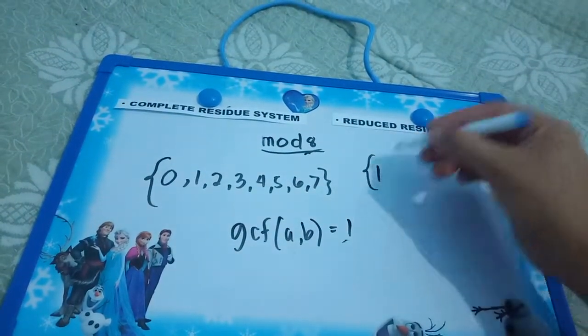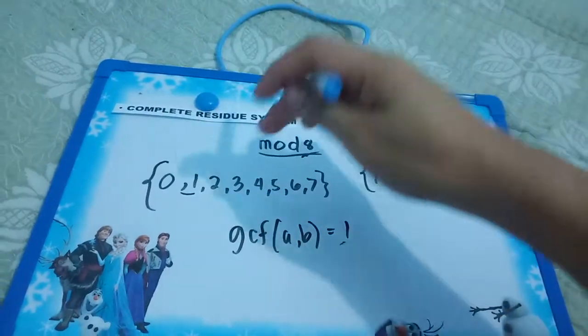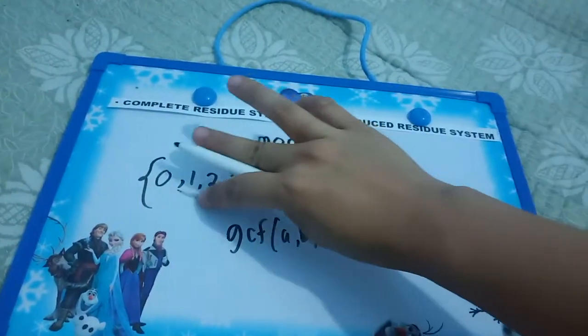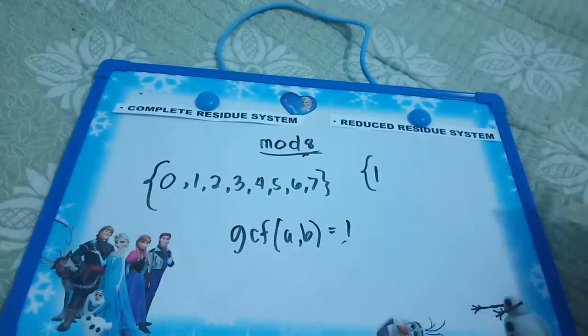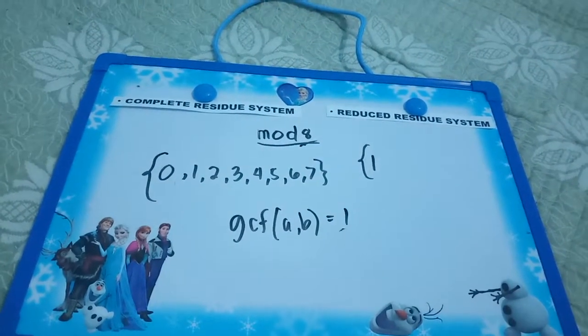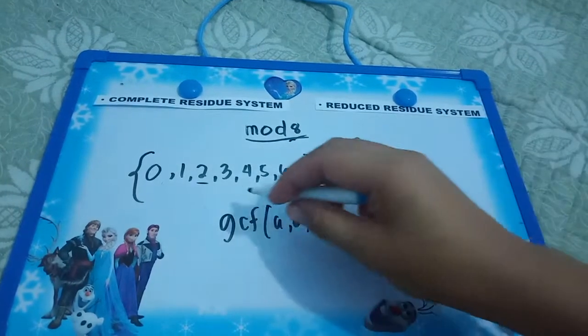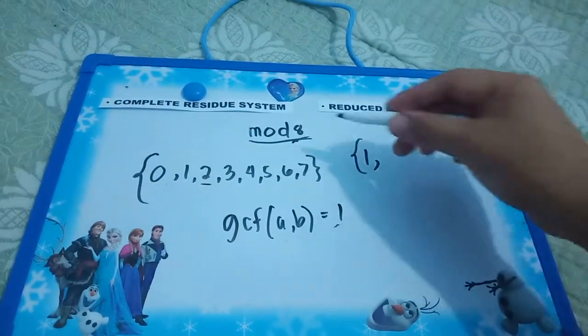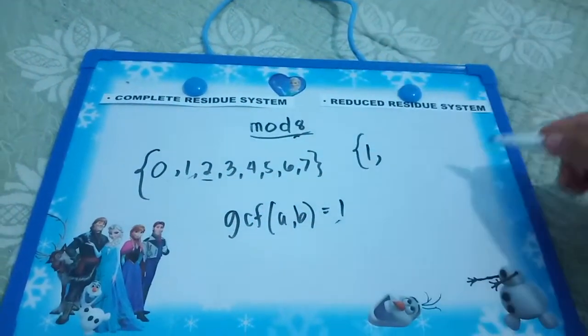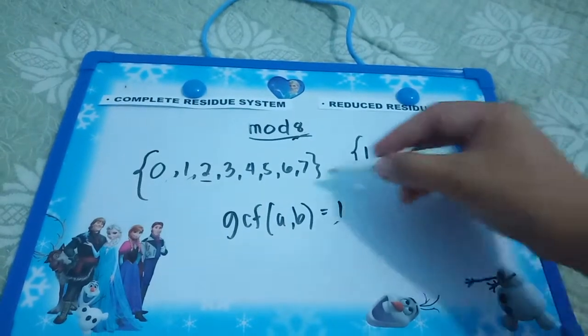How about 1? Yes, since 1 has only 1 factor, 1 and itself. How about 2? No, because they share common factors, which is 2. How about 3? Yes.